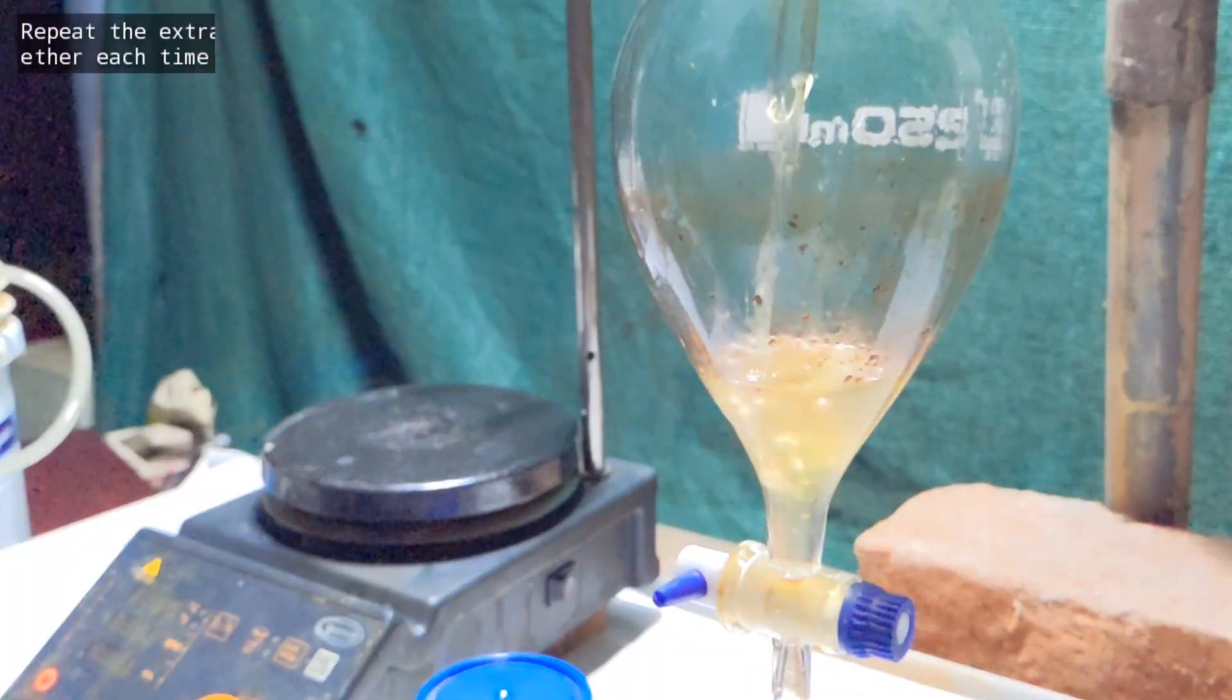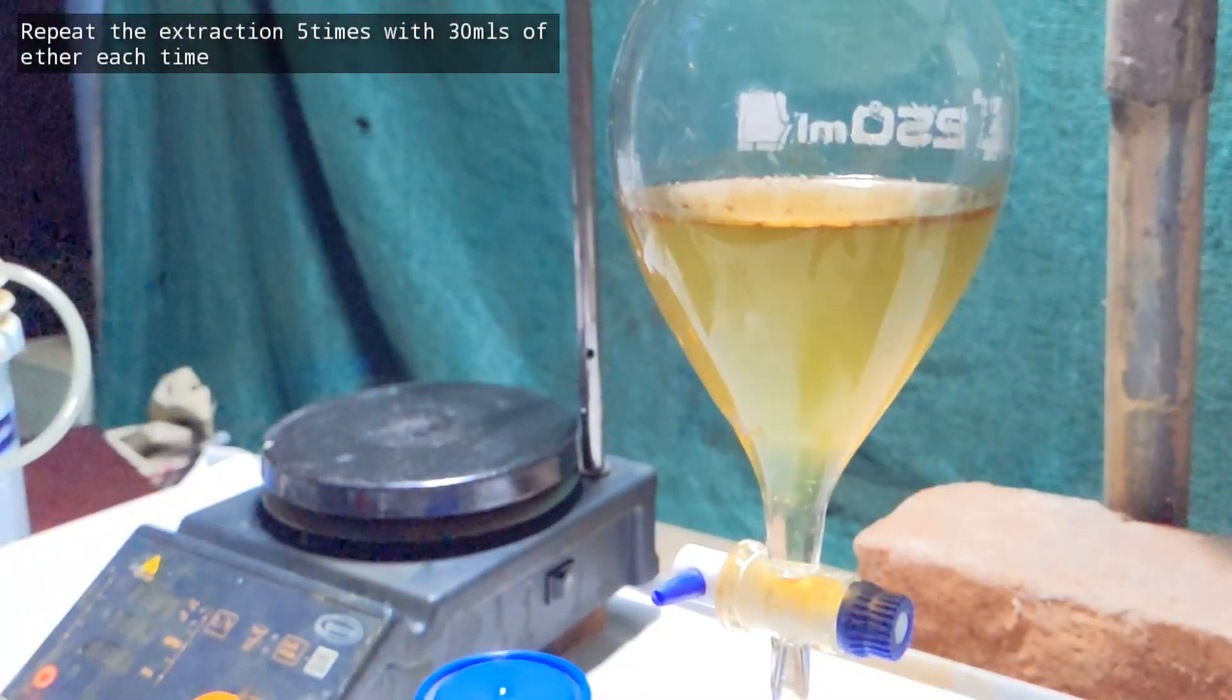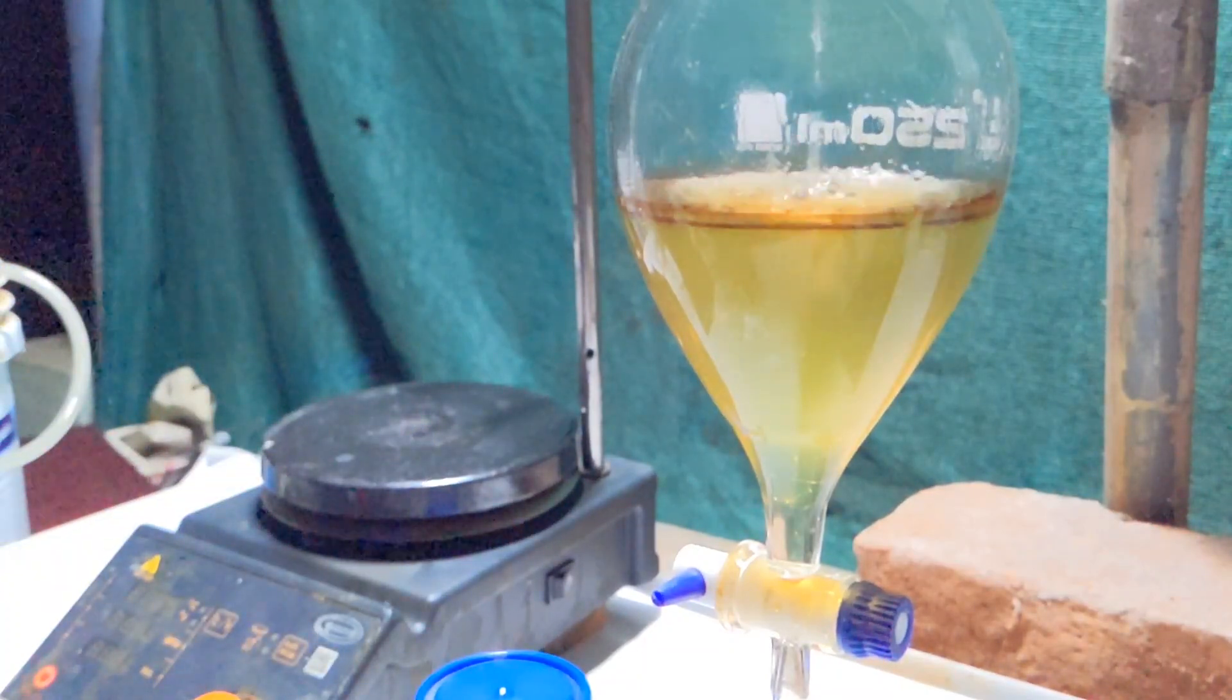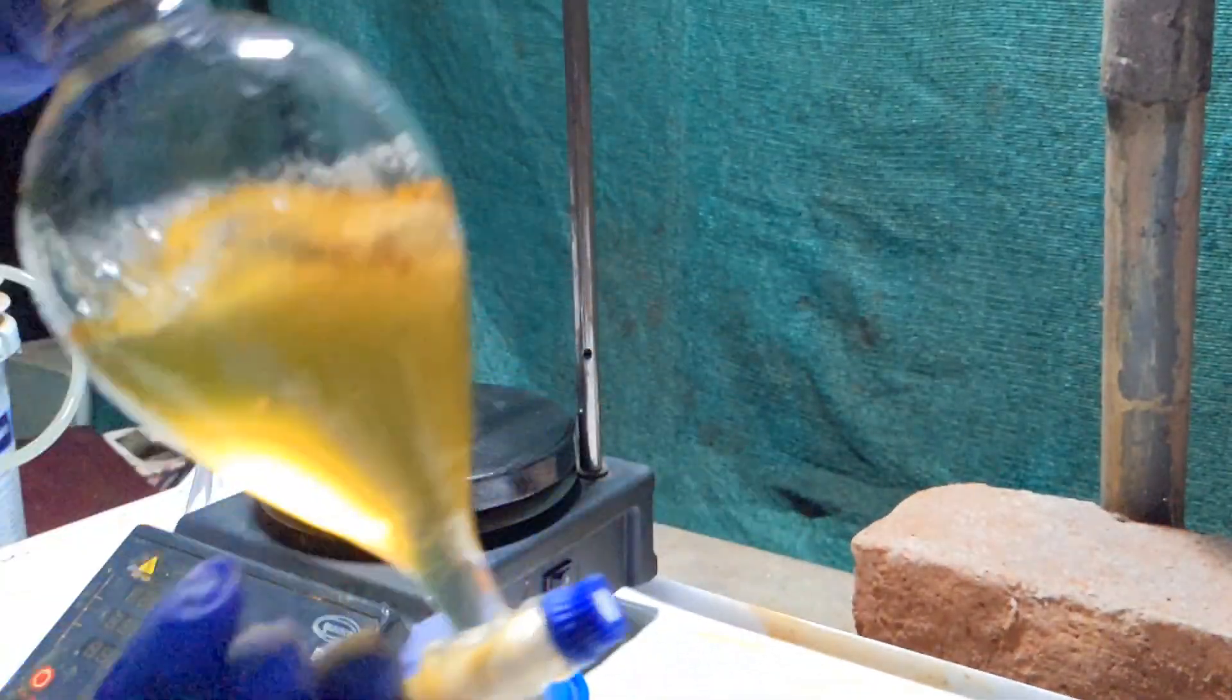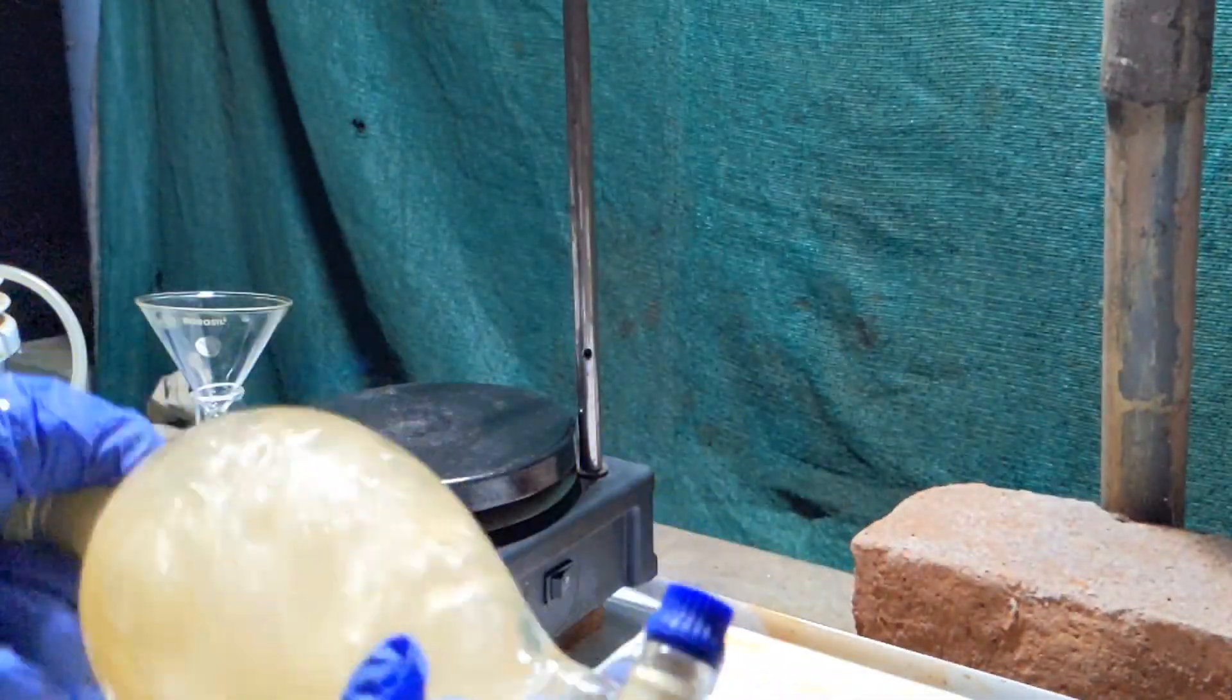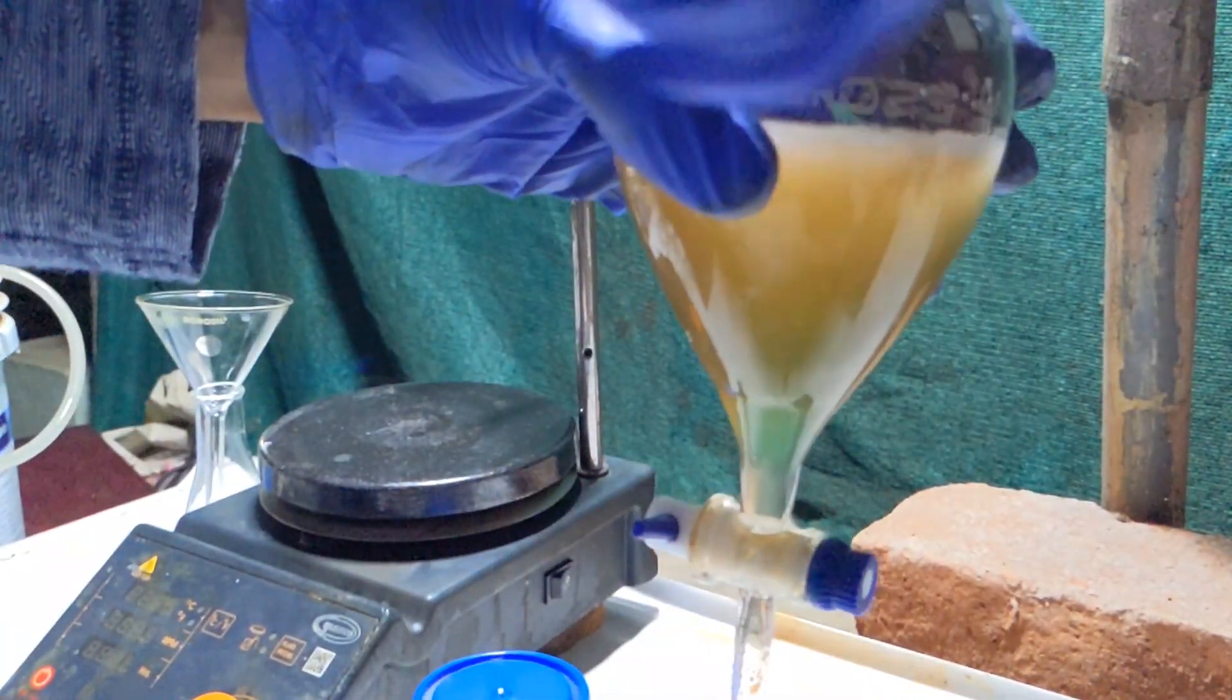After the first extraction, transfer the aqueous layer back into the separatory funnel and add another 30 ml of diethyl ether. Repeat this procedure 5 times with diethyl ether 30 ml each time, and this will make sure that all of the benzyl alcohol is extracted from the solution.